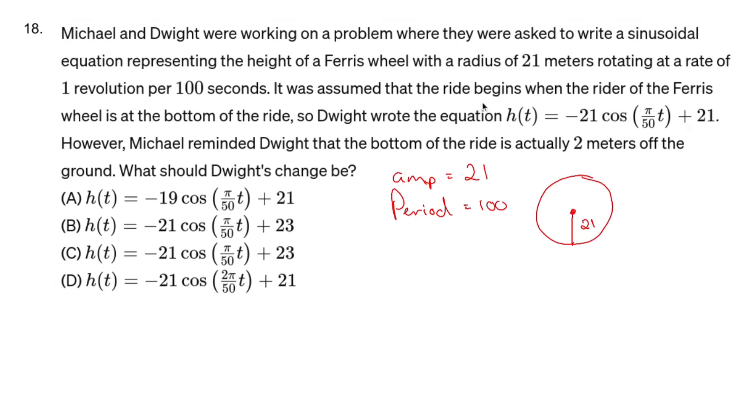It was assumed that the ride begins when the rider of the Ferris wheel is at the bottom of the ride. So Dwight wrote out the equation h(t) = -21 cos(π/50 t) + 21. Now let's see what that looks like.